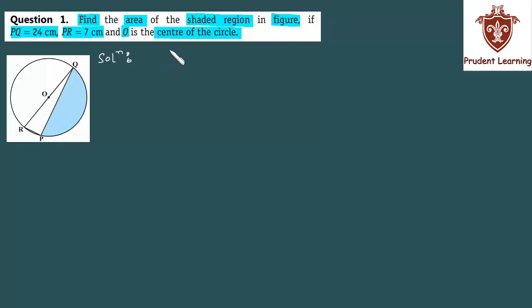Now let us see the solution. First, let us write what we are given in the question. We are given that length PQ is 24 cm. PQ is 24 cm. PR is 7 cm. PR is 7 cm. And O is the center of the circle.